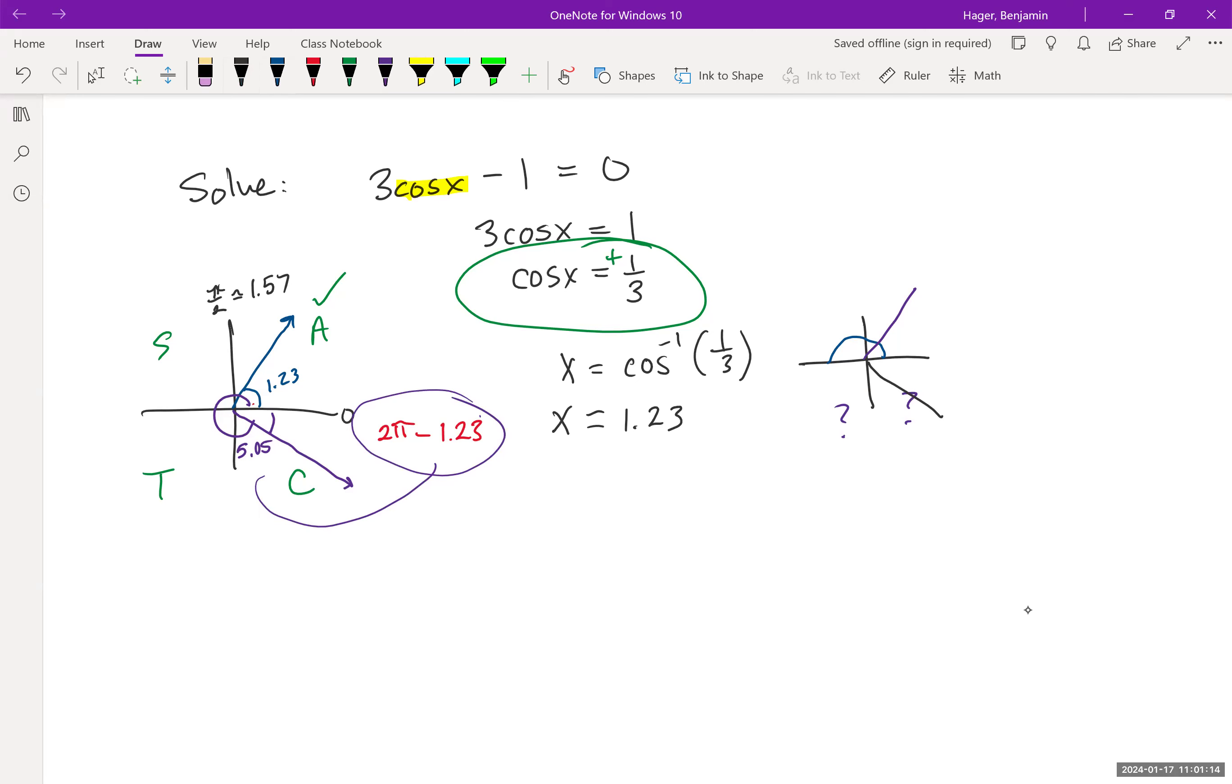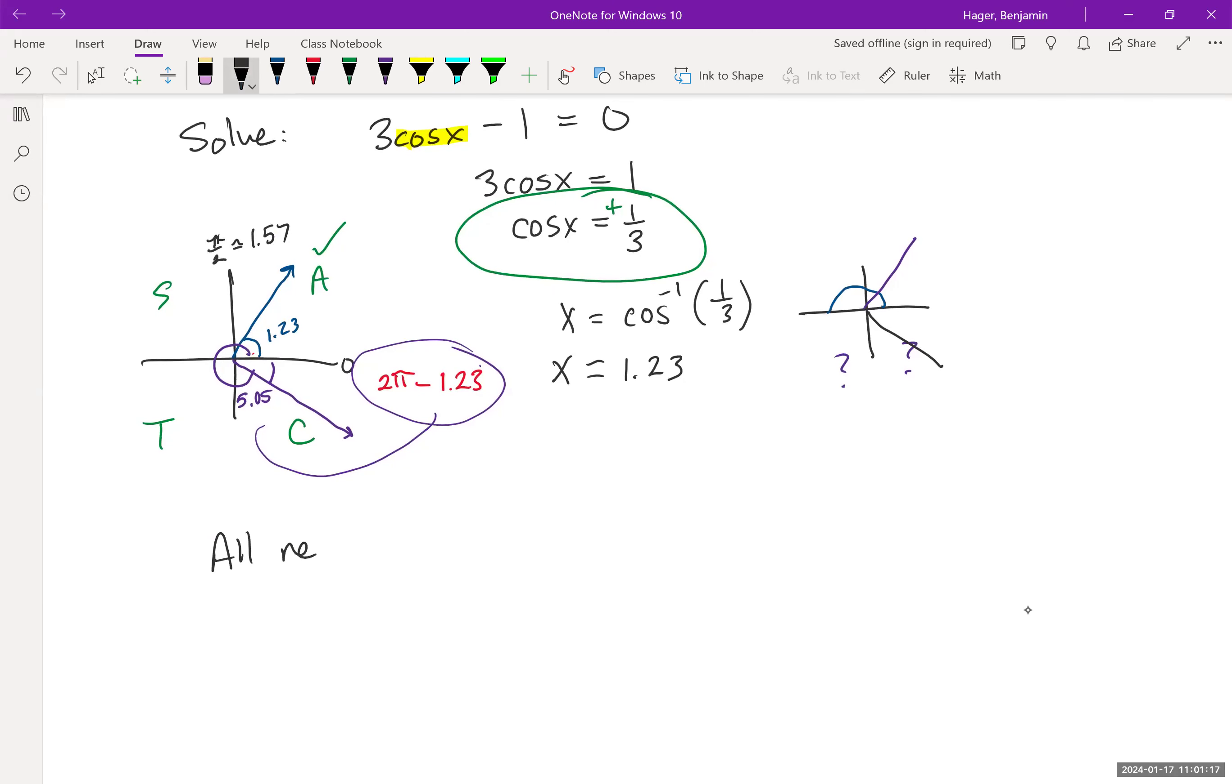My solutions would be, if I want to write all real numbers, x would be approximately 1.23, but it could also be anybody coterminal to that, so plus 2πk. Or x could be 5.05 or anybody coterminal to that. You really need to state what k is, because what makes these coterminal is that k is an integer, not a fraction or decimal. So you really need to state in the problem that k is an integer. There's our general solution representing infinitely many solutions.